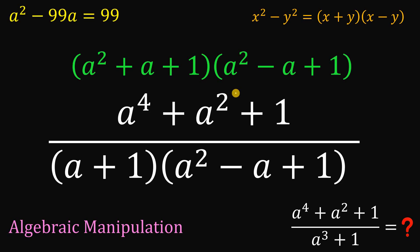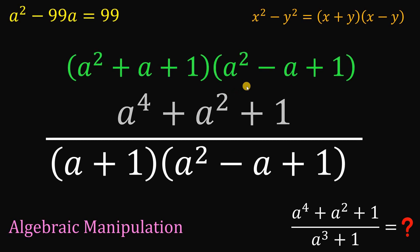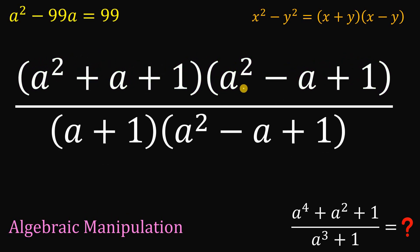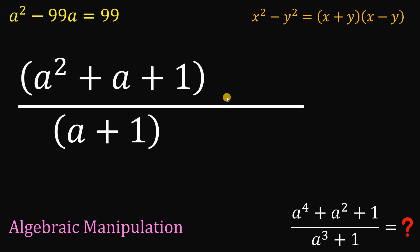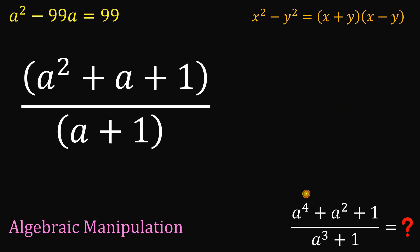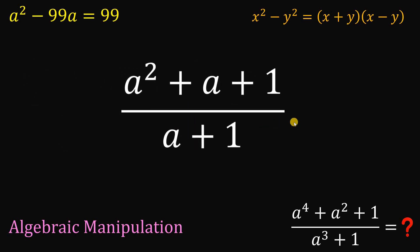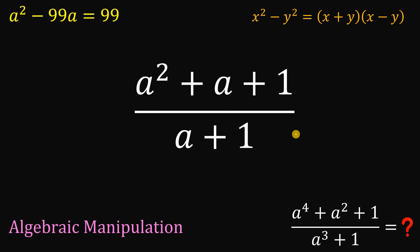We can now replace our numerator with its factored form. Notice that a squared minus a plus 1 is a common factor in both the numerator and denominator. We can cancel this out since it equals 1. Our expression then simplifies to a squared plus a plus 1, all over a plus 1.